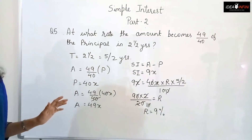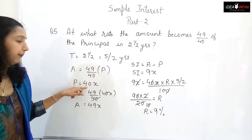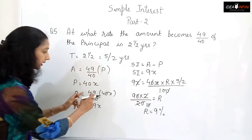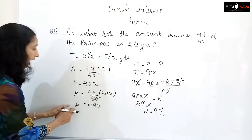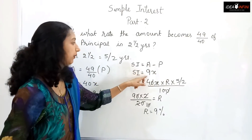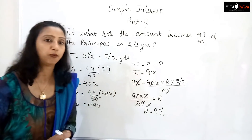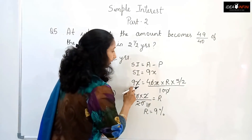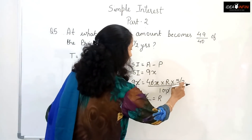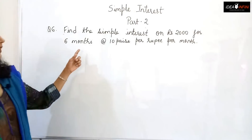To recap: taking P = 40x (since the amount is 49/40 of P), the amount = 49x and SI = 9x. Substituting into SI = PRT/100 with P = 40x and T = 5/2 years gives R = 9%. Taking P as 40x makes the calculation easier because the 40 cancels the denominator neatly.